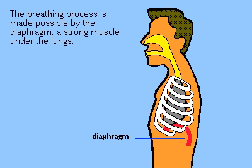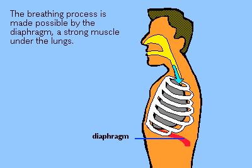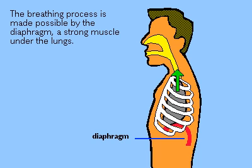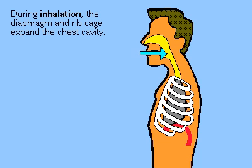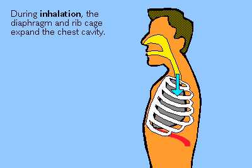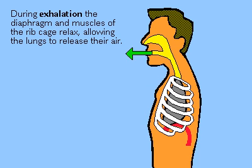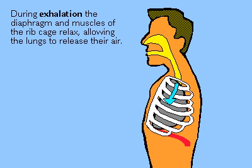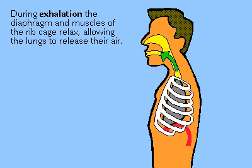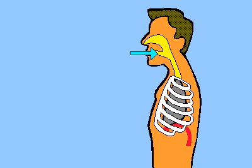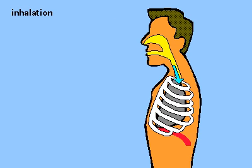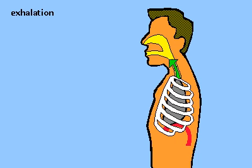Breathing is accomplished with the diaphragm, a strong muscle under the lungs. During inhalation, the diaphragm and ribcage expand the chest cavity, causing the lungs to suck in air with fresh oxygen. During exhalation, the diaphragm relaxes, compressing the lungs to force out the air with waste carbon dioxide.